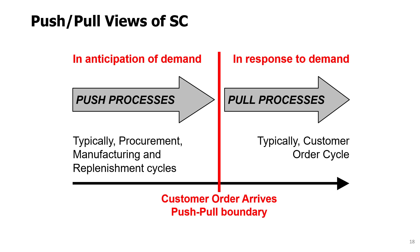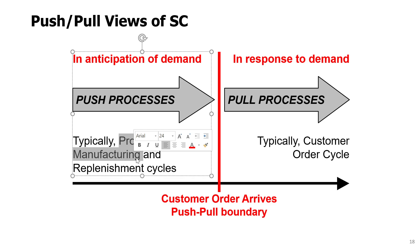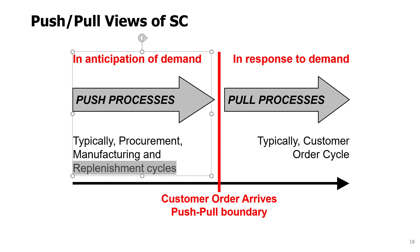Pull means that the demand has occurred and the customer is pulling for some actions to take place. Typically, the pull process will be the customer order cycle — when a customer buys a toothpaste at a retailer, this is a pull process because the demand is just occurring. Whereas the other stages — like procurement of parts for a manufacturer, then the manufacturing cycle, and replenishment from manufacturer to distributor or further to retailer — these are usually done as push processes, done in anticipation of demand.